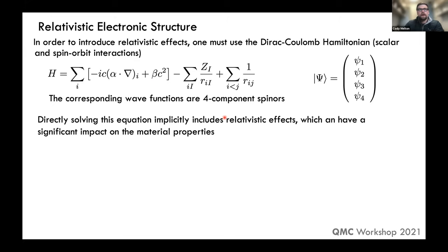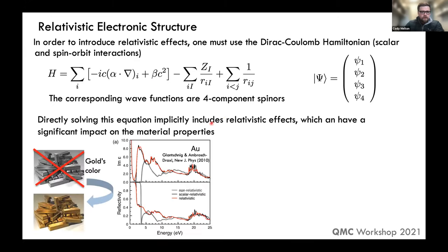A quintessential example of relativistic effects is the color of gold, which is purely due to relativity. If you calculate the imaginary part of the dielectric constant or the reflectivity, the non-relativistic solution gives a peak around 3.5 eV, whereas the fully relativistic solution shifts it down to about 2.1 eV — corresponding roughly to the color yellow, which is why gold looks the way it does.